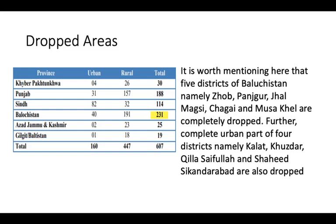Disability estimation was also included for the first time by Pakistan Bureau Statistics. The dropped areas excluded from the survey were either restricted by the army or due to law and order situations. In Balochistan, six districts — Zawf, Angor, Jalmaksi, Chari, and Musaqin — were dropped, leaving 31 districts from which data was generated.